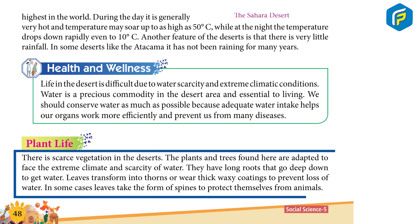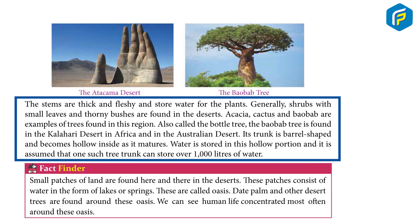Plant Life: There is scarce vegetation in the deserts. The plants and trees found here are adapted to face the extreme climate and scarcity of water. They have long roots that go deep down to get water. Leaves transform into thorns or wear thick waxy coatings to prevent loss of water. In some cases, leaves take the form of spines and protect themselves from animals.